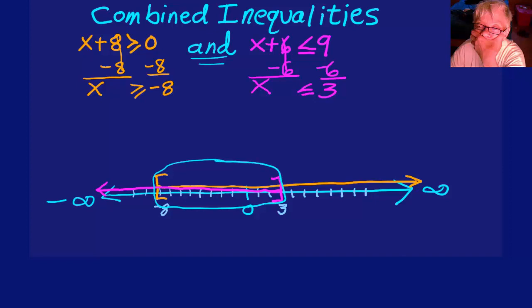Now look at where the two colors overlap. That is the solution, because the word AND means we're looking for the overlap. So x can be any number between negative 8 and positive 3, including negative 8 and including positive 3, which is what the brackets say, and the interval notation looks pretty much like that.